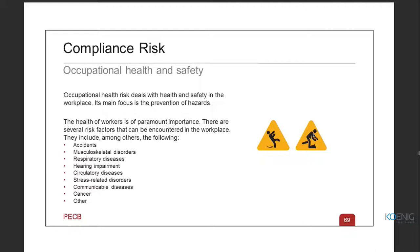Further workplace health concerns include hearing impairment — which is why office spaces are kept relatively quiet; circulatory diseases; stress-related disorders, which are the most common; and communicable diseases — which is why, especially since COVID-19, wearing masks and maintaining distance in offices has been recommended. Anything that can put employees' lives in danger is a potential occupational health and safety hazard and must be well taken care of.